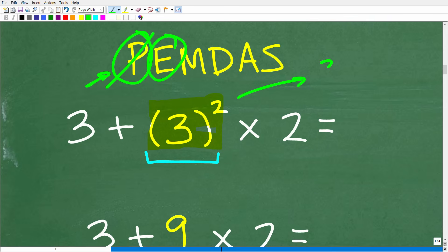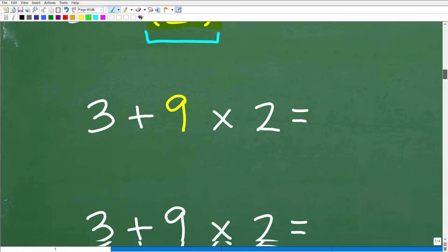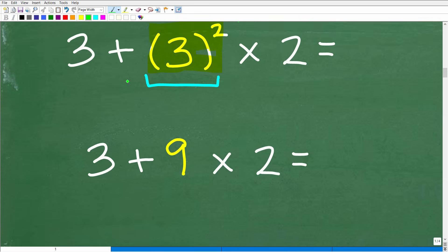So 3 squared is what? Well, hopefully you have a good understanding of basic powers. 3 squared means 3 times 3, which of course is 9. Okay, so at this point, we have 3 plus 3 squared times 2. So the result of 3 squared is 9. So the problem is 3 plus 9 times 2.